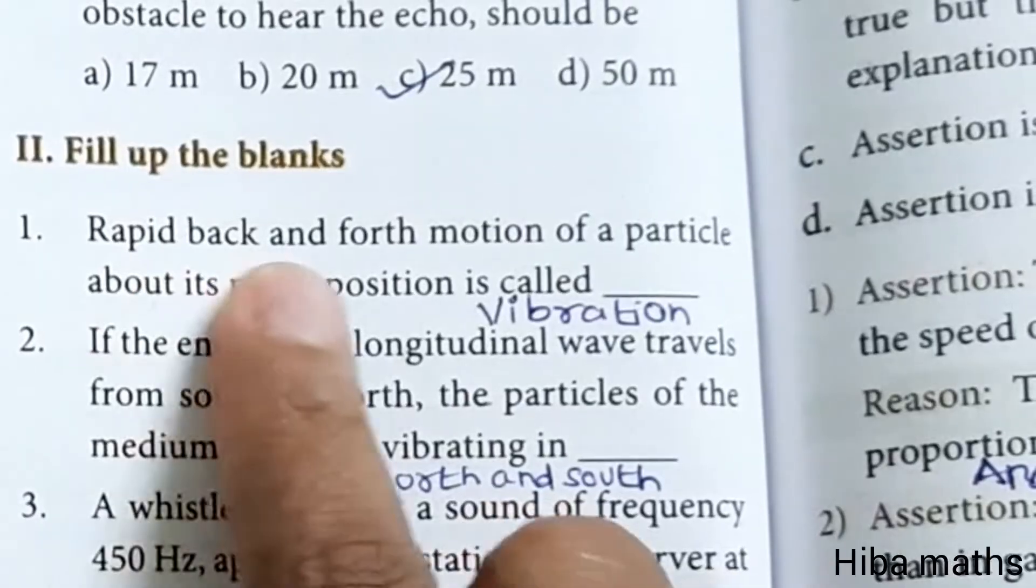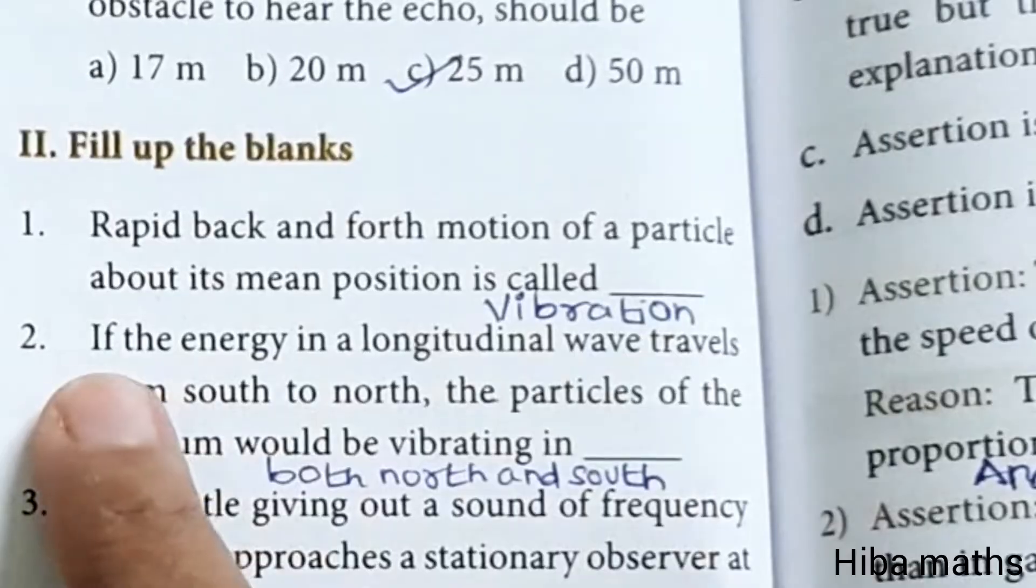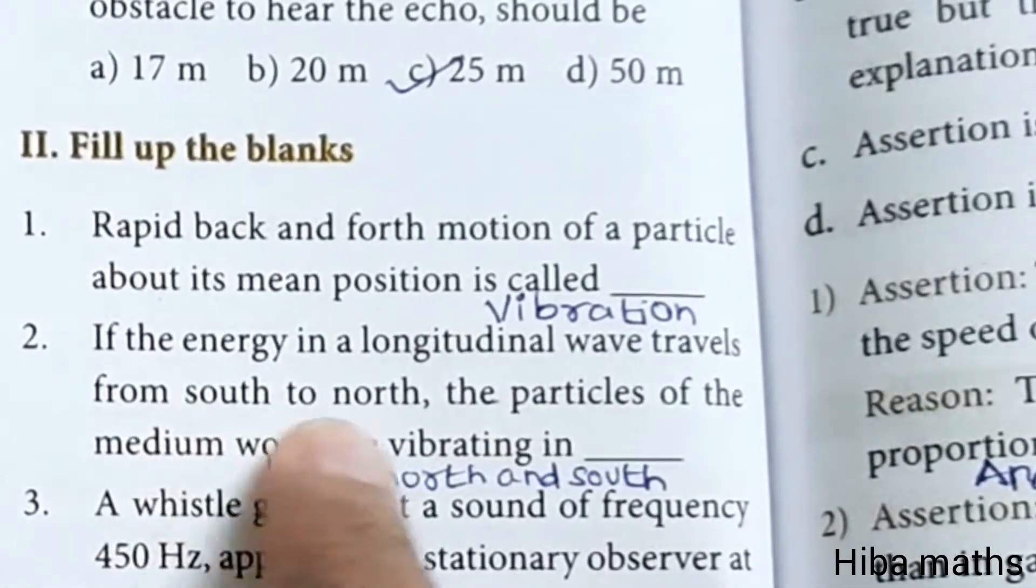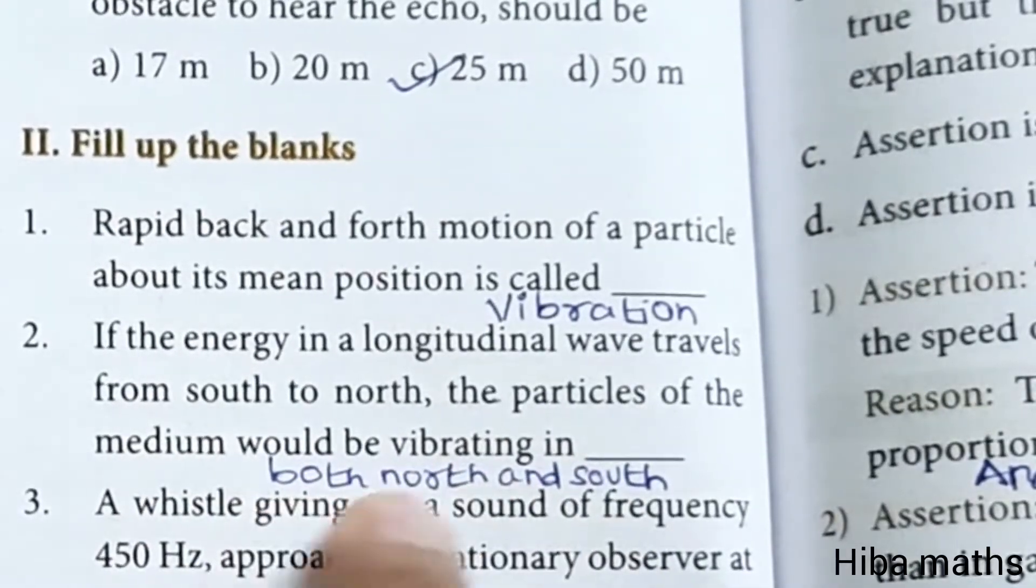Rapid back and forth motion of a particle about its mean position is called vibration. If the energy in a longitudinal wave travels from south to north, the particles of the medium would be vibrating in both north and south.